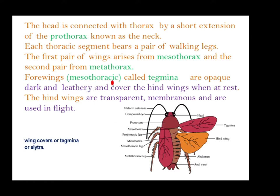The forewings are called tegmina, also known as wing covers or elytra. The mesothoracic tegmina are opaque, dark, and leathery and cover the hind wings when at rest. The hind wings are transparent and membranous and are used for flight.